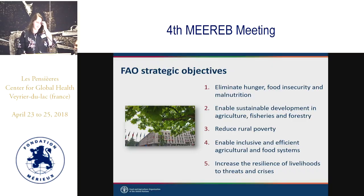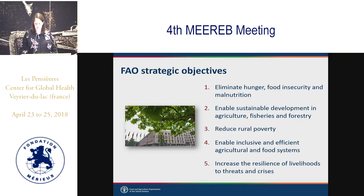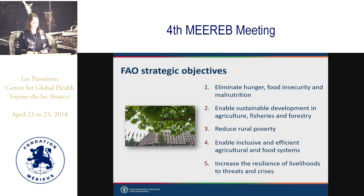I thought I'd start off by telling you a little bit about FAO. This is one of the UN agencies, started back in 1945. All of our work fits under five strategic objectives: eliminating hunger, food insecurity, and malnutrition; enabling sustainable development in agriculture, fisheries, and forestry; reducing rural poverty; enabling inclusive and efficient agricultural and food systems; and increasing the resilience of livelihoods to threats and crises.